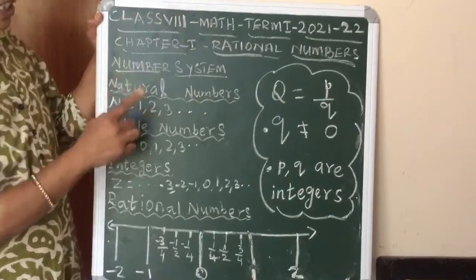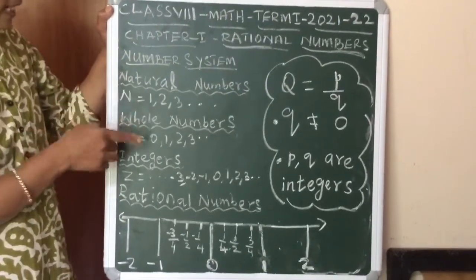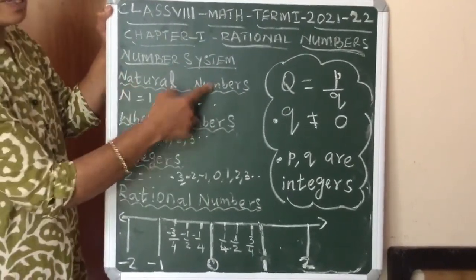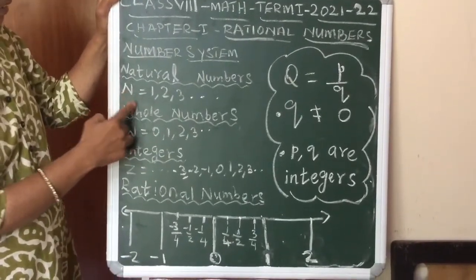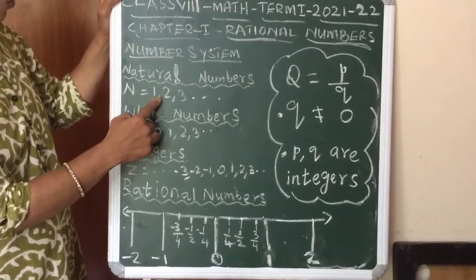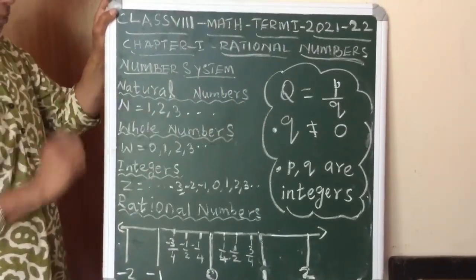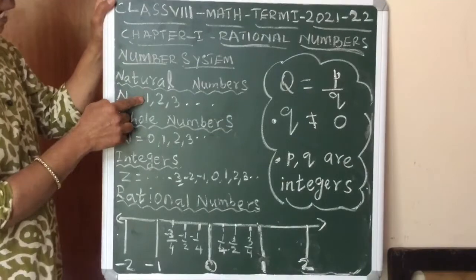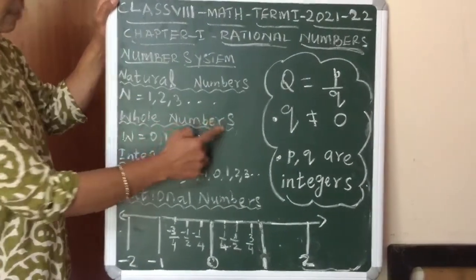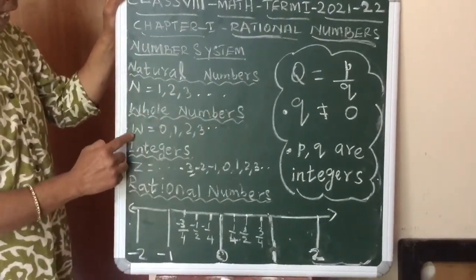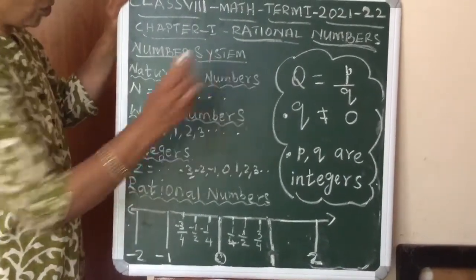First, let us recall natural numbers. Natural numbers are the counting numbers, denoted by N: 1, 2, 3, and so on. The smallest natural number is 1. When 0 is included along with natural numbers, the number system is called whole numbers, denoted by W: 0, 1, 2, 3, and so on.